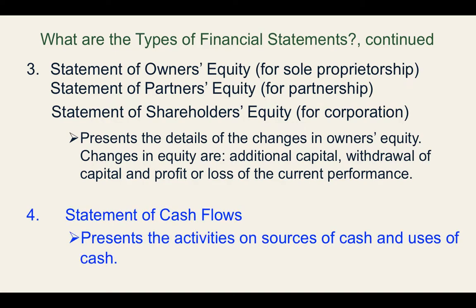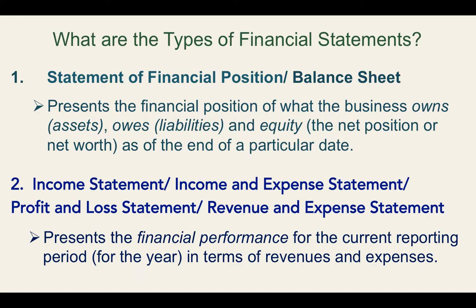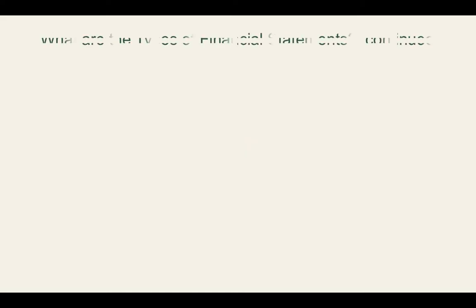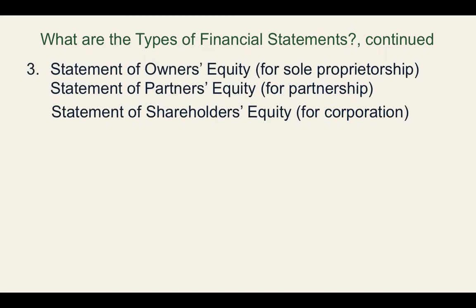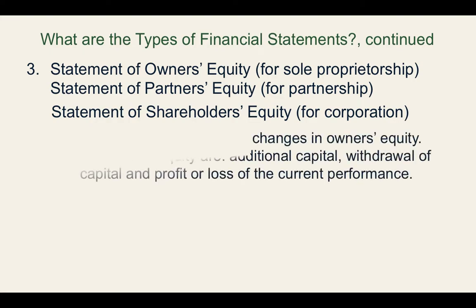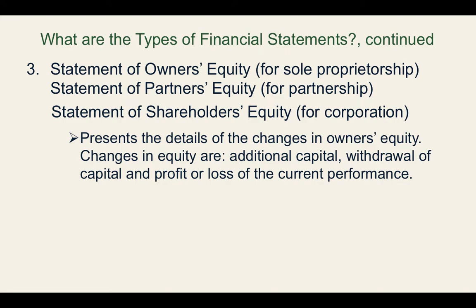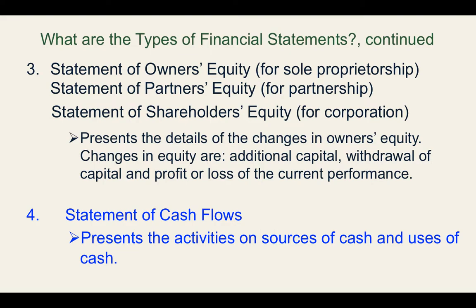Next is the statement of cash flows. The statement of cash flows presents the activities on sources of cash and uses of cash. So we have discussed four types of financial statements: the statement of financial position or balance sheet, which presents assets, liabilities, and equity; the income statement, which presents financial performance in terms of revenues and expenses; the statement of owner's equity, which presents the changes in the capital part of the business; and the statement of cash flows, which presents the activities on sources and uses of cash.